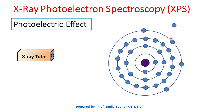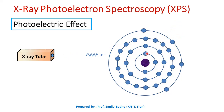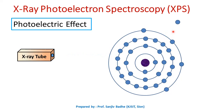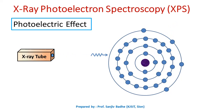These ejected electrons are called photoelectrons. The energy is absorbed and the electron is knocked off — this electron is called the photoelectron. The kinetic energy of the ejected electron is characteristic of the atom from which these electrons are coming out. Therefore, by measuring the kinetic energy of these electrons, we can identify the atom. We can also identify from which orbit the electron is coming out.